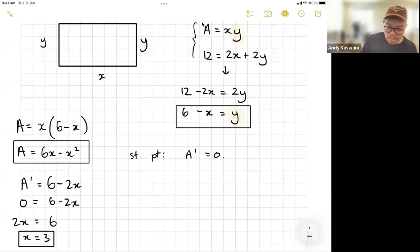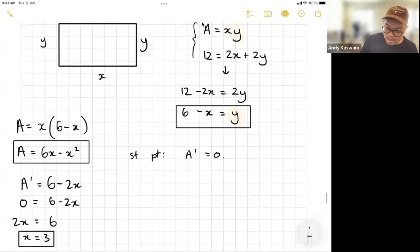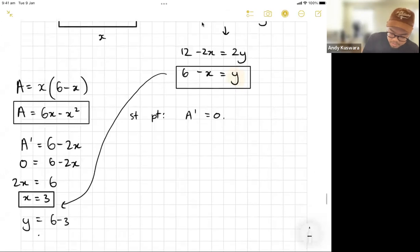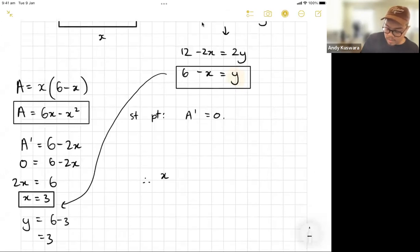Now while I'm at it I also know I want to find what my y value is, then I can plug it into my original which is for me right there. y equals 6 take away x, so 6 take away 3, which equals 3. So essentially the stationary point is going to be x equals 3, y equals 3.